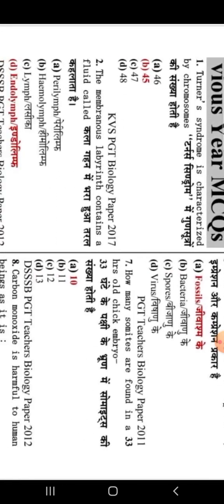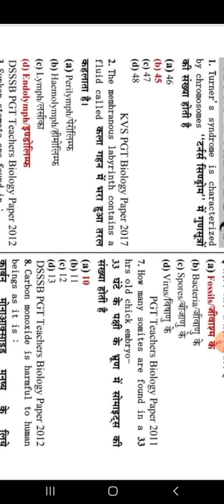The very first question you can see on my screen is: Turner's syndrome is characterized by how many chromosomes? Turner's syndrome is a topic related to different types of chromosomal disorders — polyploidy, addition of extra chromosomes, or deletion — which generate different types of syndromes. The answer is 45. As you can see on my screen, the asking year of the competitive exam is also mentioned here.